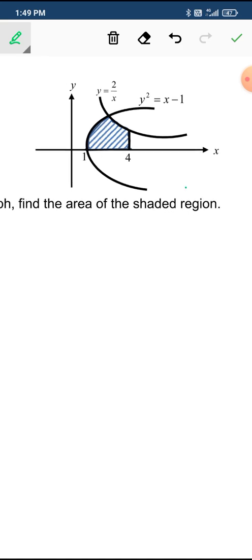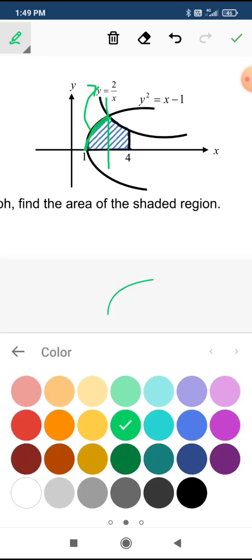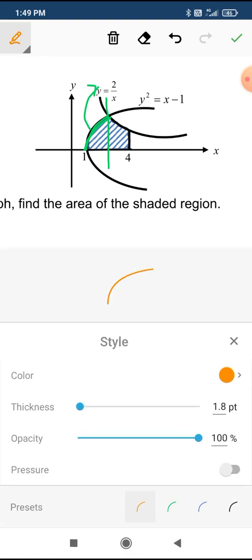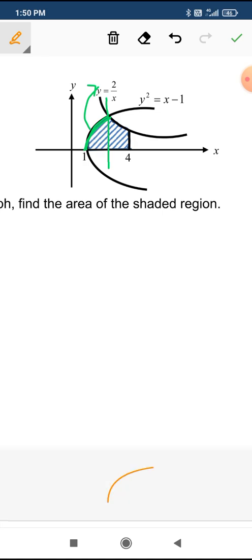As you can see there is one region here because this function is this and then we have another region which is this. So you need to find this point.